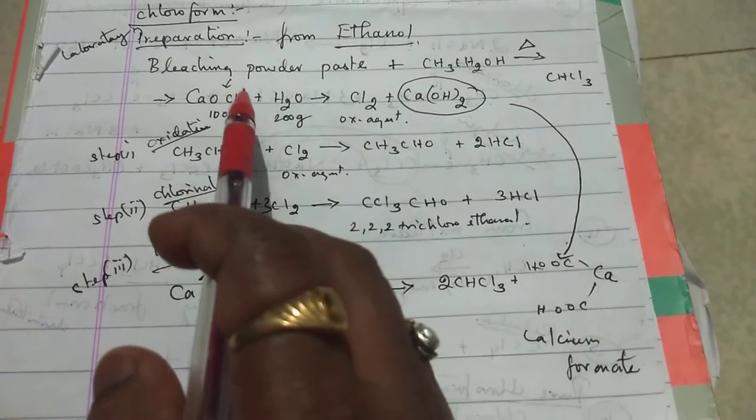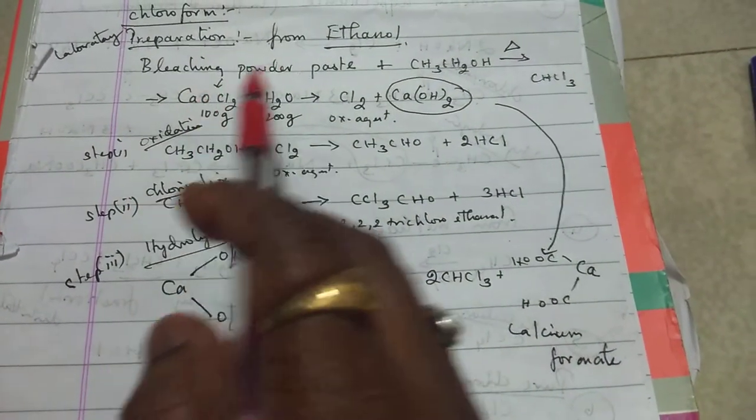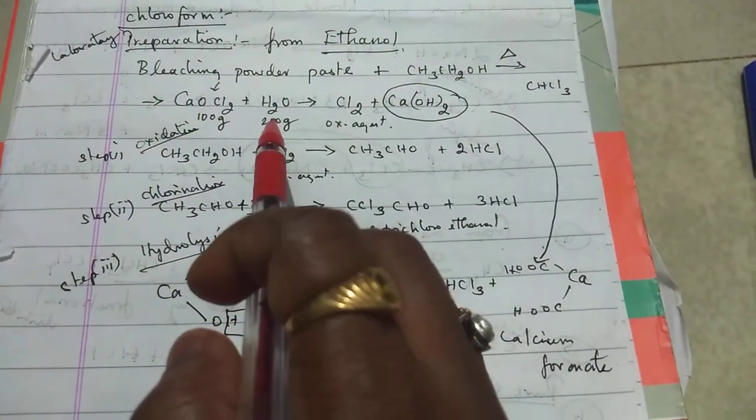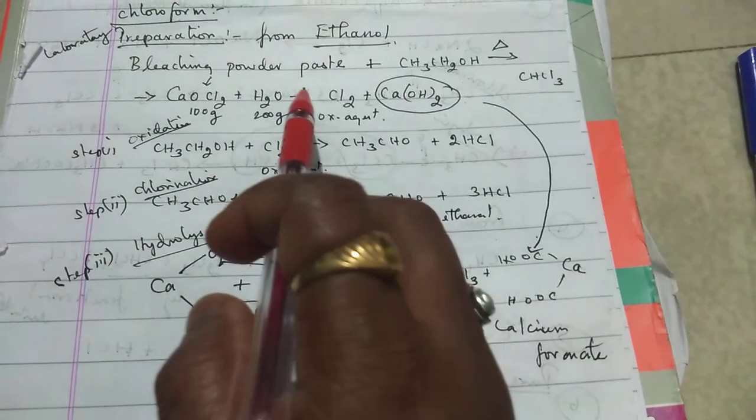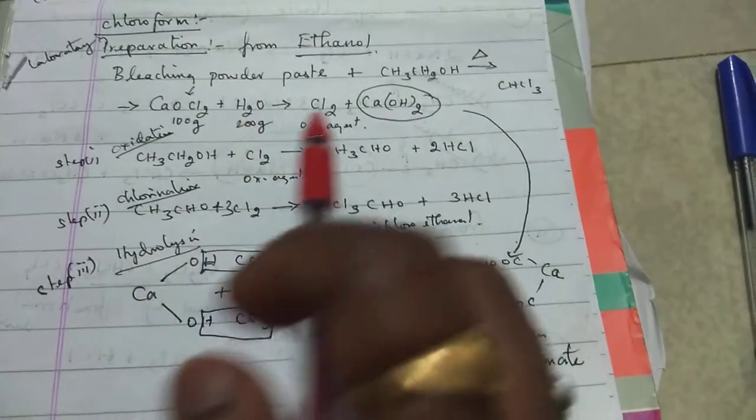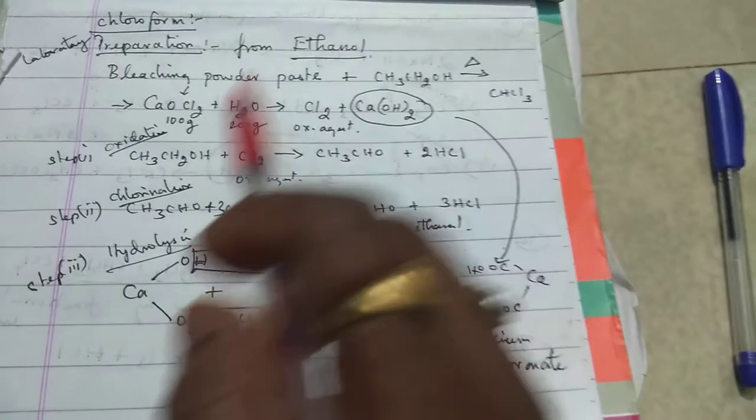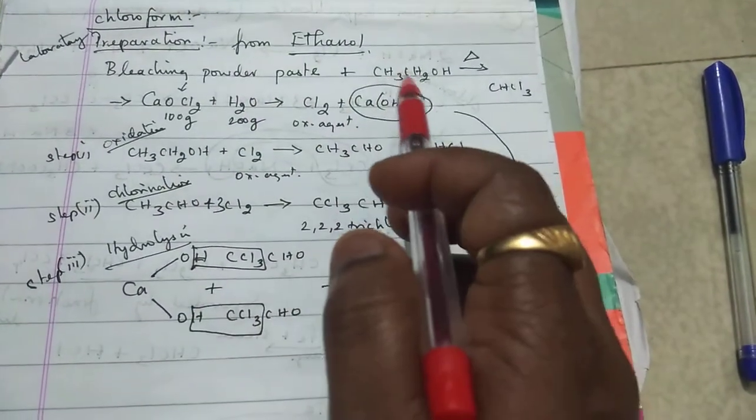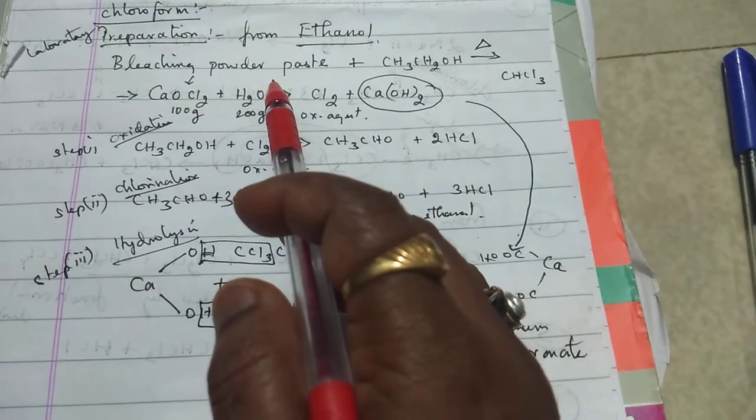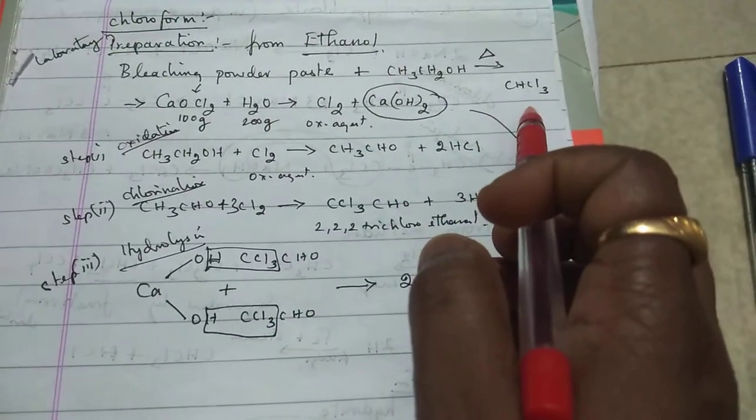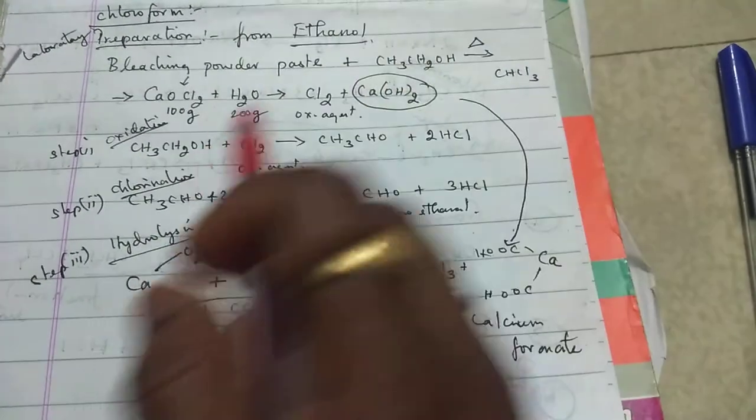We need three materials: bleaching powder paste with water, and ethanol. When ethanol reacts with a paste of bleaching powder, you will get chloroform by heating it.